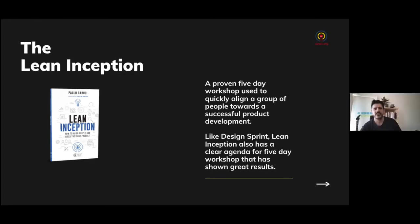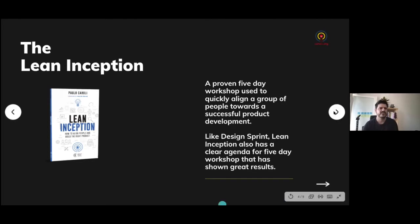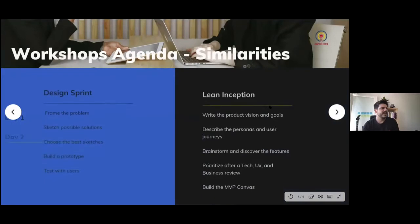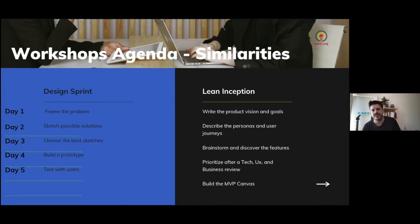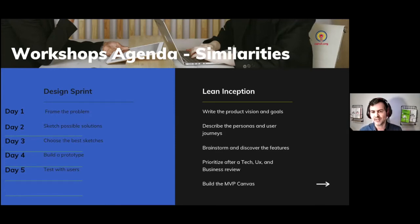Both of you quickly realized that you must understand the problem first, then align the team to look for the solution. Looking at similarities on the agenda: the first day is about framing the problem. In Lean Inception, that means writing the project vision and goals. I think they're both about getting the context. In both Design Sprint and Lean Inception, things happen before you're in that collaborative week, and the first day is about getting alignment from a business perspective.